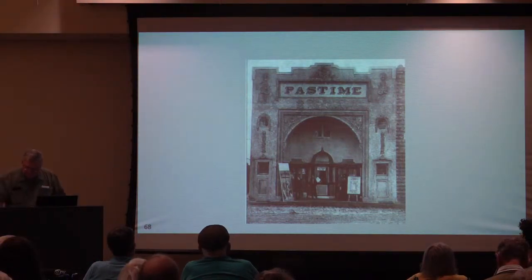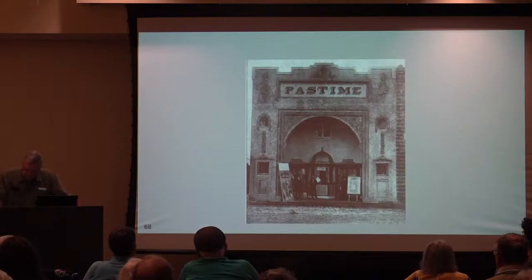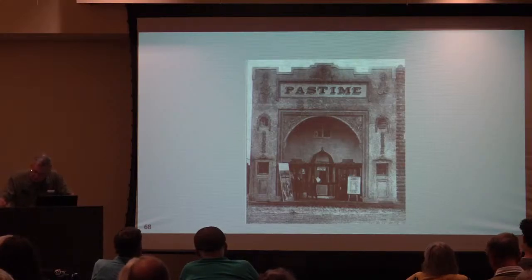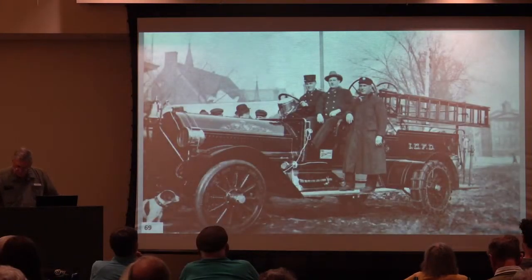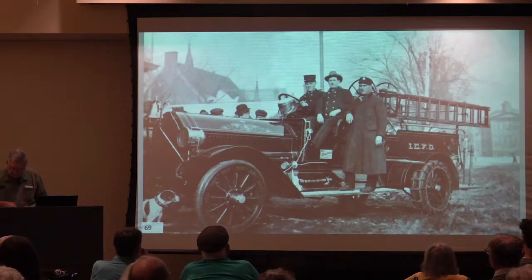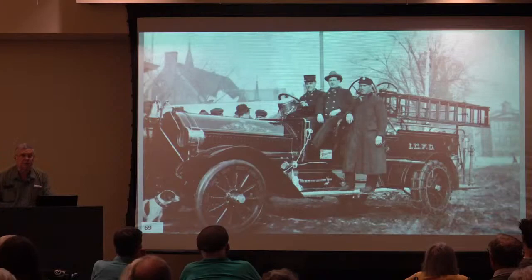In downtown Iowa City, the Pastime was the first building constructed specifically for the showing of movies. It opened as the Pastime Picture Palace in January 1912 on East College Street on the site of today's Graduate Hotel. The Pastime was renamed the Capitol in 1947 and ran until 1960. Other downtown theaters that have come and gone include the Englert, the Garden Theater, Varsity, the Astro, the Strand, and the Iowa Theater — with only the Englert name remaining, though it's no longer screening movies. Around 1922, the professional paid firefighting force was established in Iowa City, ending the era of firefighting entirely by volunteers.